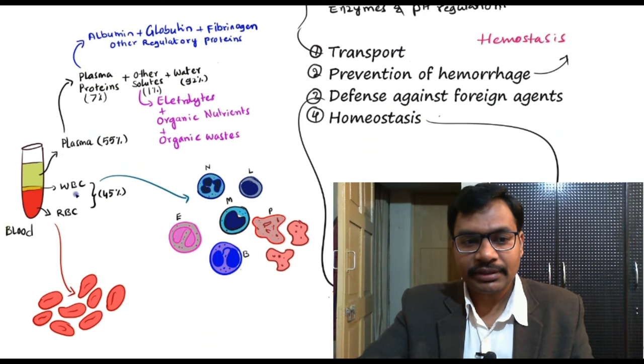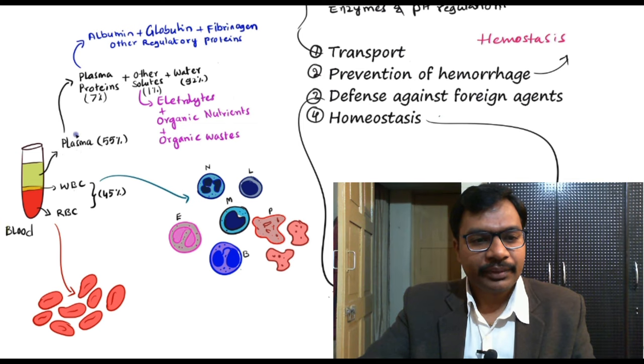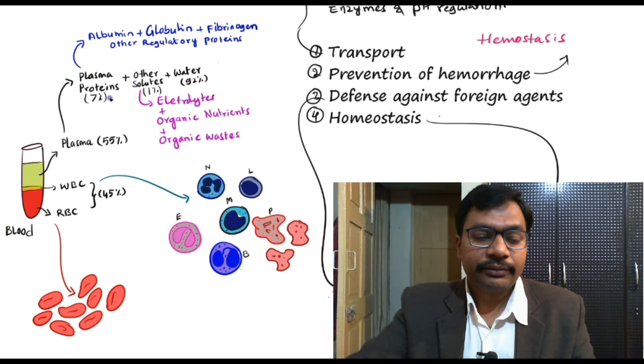When you pour plasma into a container, it takes the shape of that container. If you pour plasma into a glass, it takes the shape of the glass. That is the reason why this liquid part of the blood is named plasma. So in our blood we have a liquid part and a cellular part. The cellular part is RBCs and WBCs, and the liquid part is plasma, which is further divided into varieties.